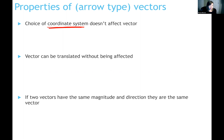If two vectors have the same direction and the same magnitude, they are the same vector. A vector is completely described by its magnitude and its direction, so if any two vectors share both of those quantities, they are equal to each other - they are the same vector.